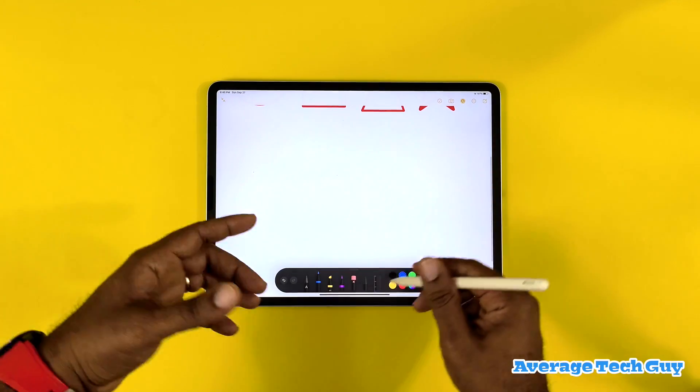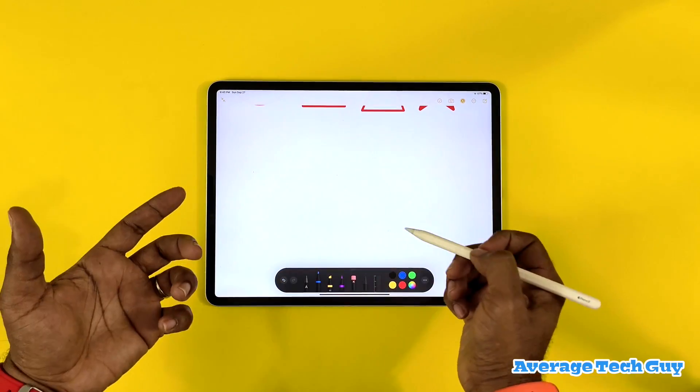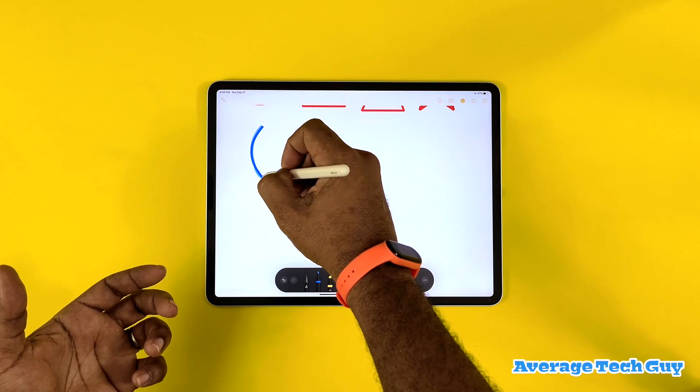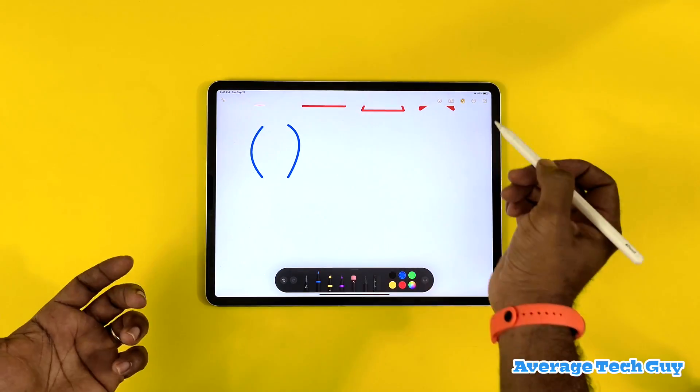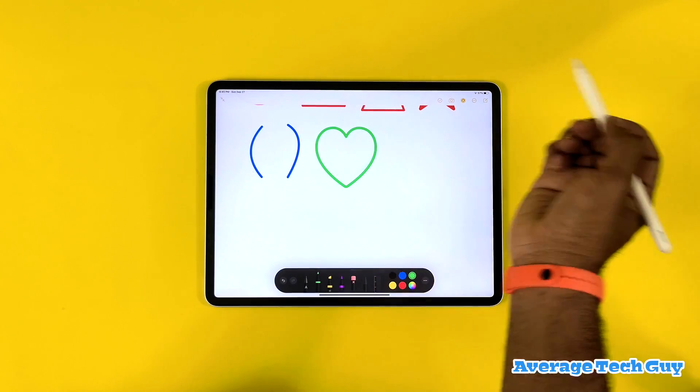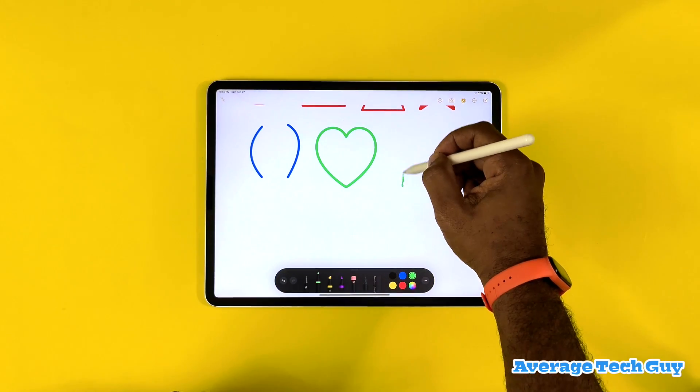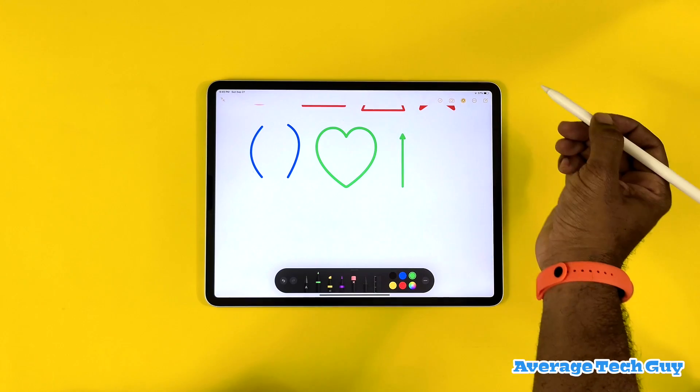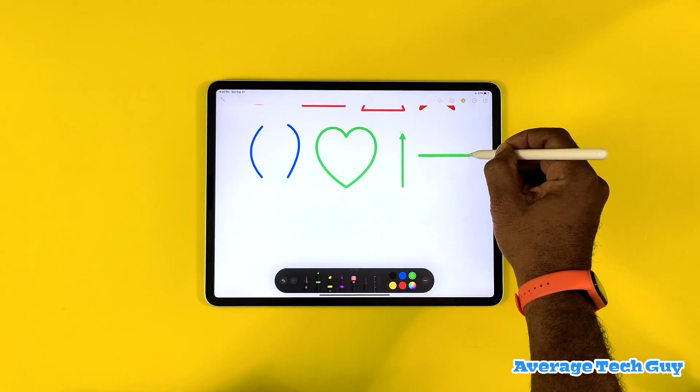Apple has actually thrown in a couple of things we can use such as parentheses. What about a heart? We can do a heart, an arrow, or a straight line. There we go, all work, no issues.